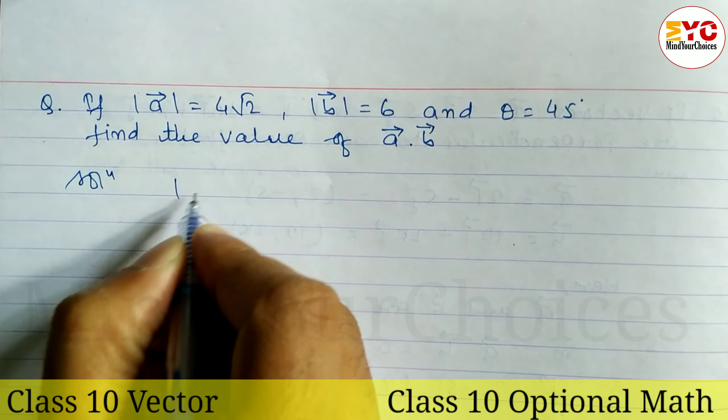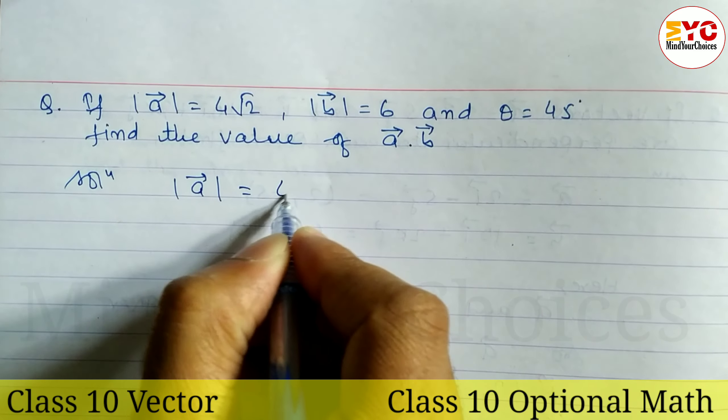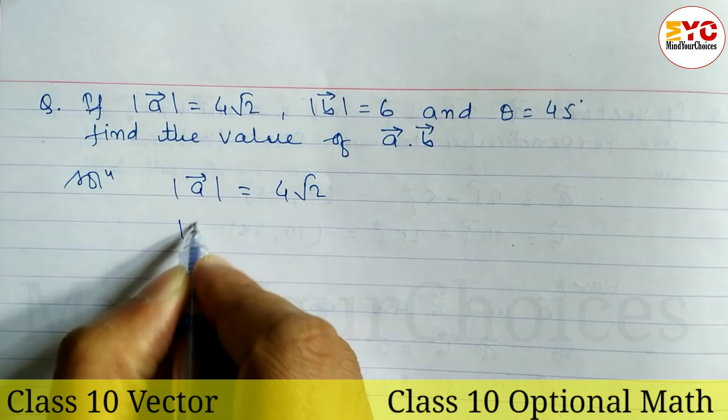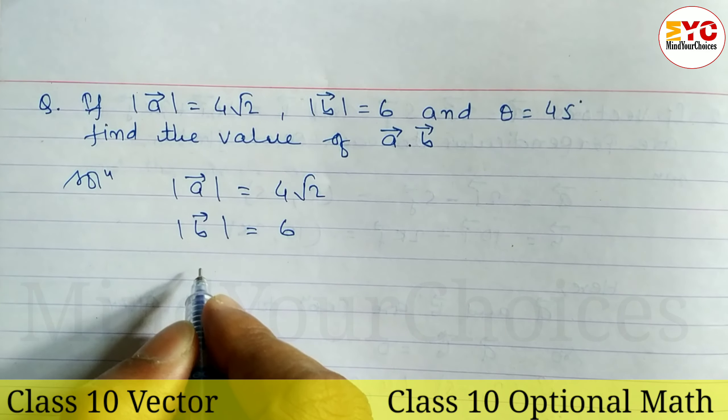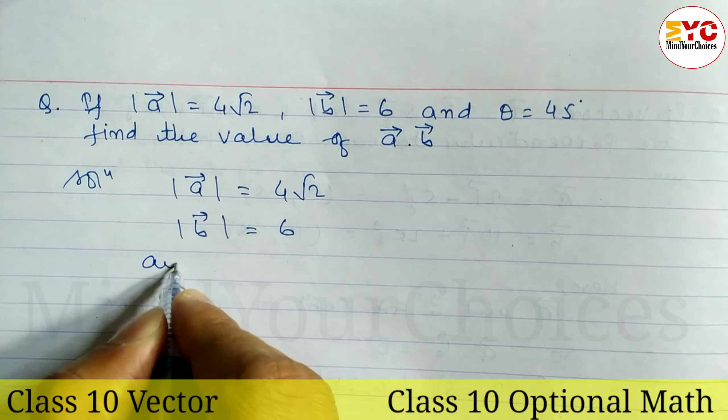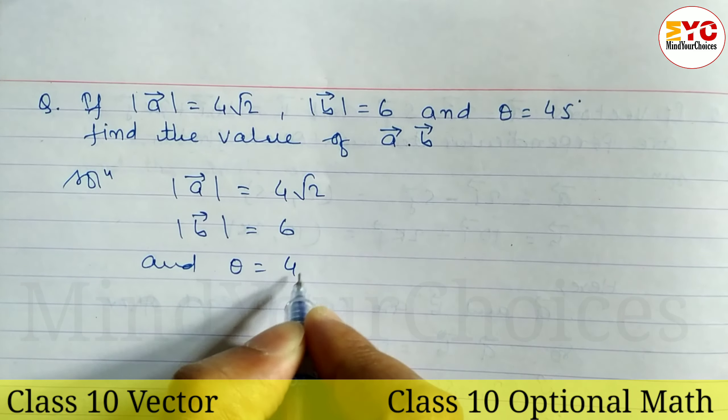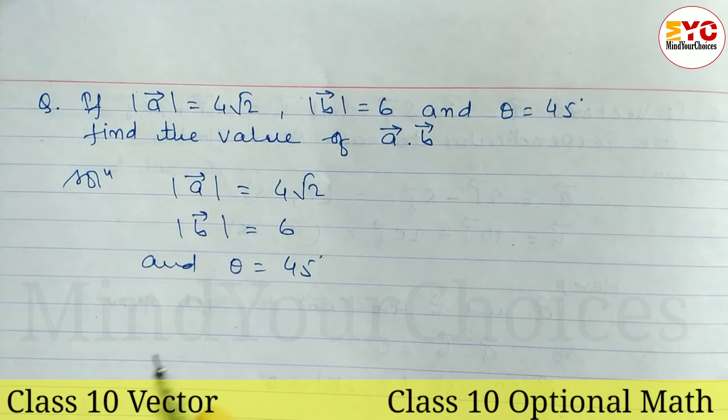Let's start here. Modulus a is equal to 4 root 2, similarly modulus b is equal to 6, and theta is equal to 45 degrees.